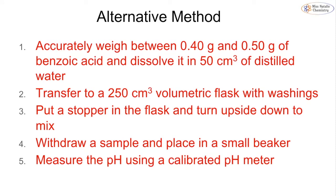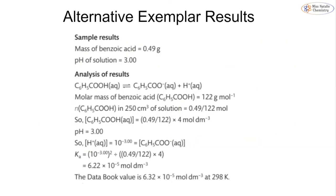An alternative method that we can do if we have a solid acid, something like benzoic acid, is we would weigh it out and dissolve this into 50 cm³ of distilled water. We then transfer it into a volumetric flask, making sure to put all the washings in as well. We put a stopper in the flask and then we invert it or turn it upside down to mix. We withdraw a sample and put it into a small beaker and we can then measure the pH. We are linking our pH to our concentration of our hydrogen ions.